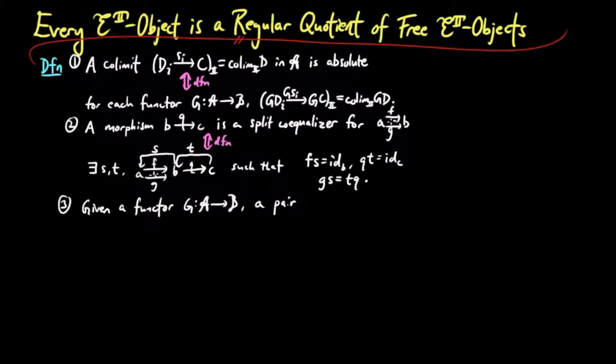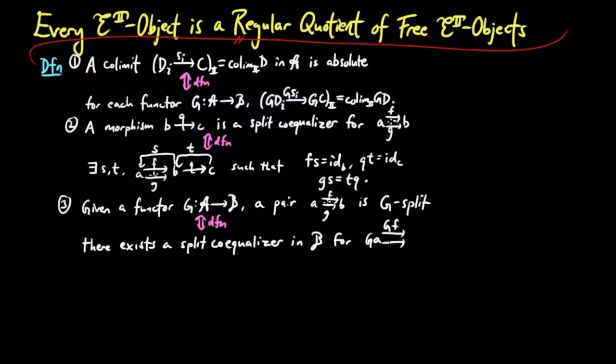And three, given a functor G, a pair of morphisms F and G is G-split if and only if there exists a split co-equalizer in the category B for GF and GG.